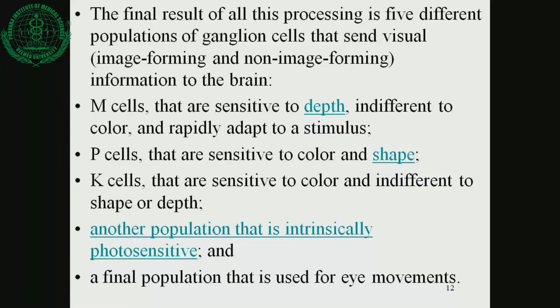The final result of all this processing is five different populations of ganglion cells that send visual information to the brain. There are different kinds of cells: M cells, P cells, K cells, another population that is intrinsically photosensitive, and a final population used for eye movement. The M cells are sensitive to depth, indifferent to color, and rapidly adapt to a stimulus. P cells are sensitive to color and shape. K cells are sensitive to color and indifferent to shape or depth. The remaining two groups are the intrinsically photosensitive population and the population used for eye movements.